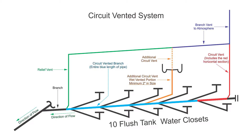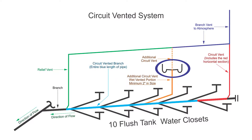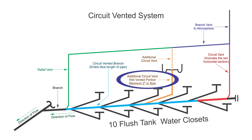So a soil/waste pipe acting as an additional circuit vent — in this picture we have two lavs draining into the additional circuit vent. All we're saying here is it needs to be 2 inches in size minimum. That goes all the way from the lav trap arms right here to where it connects into the circuit-vented branch right here.